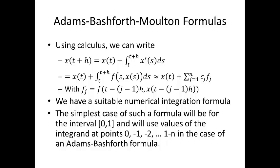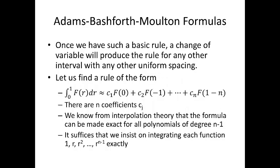Now, the simplest case of such a formula will be for the interval 0, 1. And we'll use values of the integrand at 0, 0 minus 1 minus 2 all the way to 1 minus n in the cadence of an Adams-Bashforth formula. In other words, this thing is a mouthful. Once we have a basic rule, change of variable will produce the rule for any other interval. So we can change the intervals through appropriate substitutions. Let's find a rule of the form, the integral from 0 to 1 f of r dr is equal to c1 f0 plus c2 f minus 1 all the way out to cn f to the 1 minus n. Now, the coefficient c sub j. We know from interpolation theory that the formula can be made exact for all polynomials of degree n minus 1. So, it suffices that we insist on integrating each function, 1, r, r squared, r to the n minus 1 exactly.